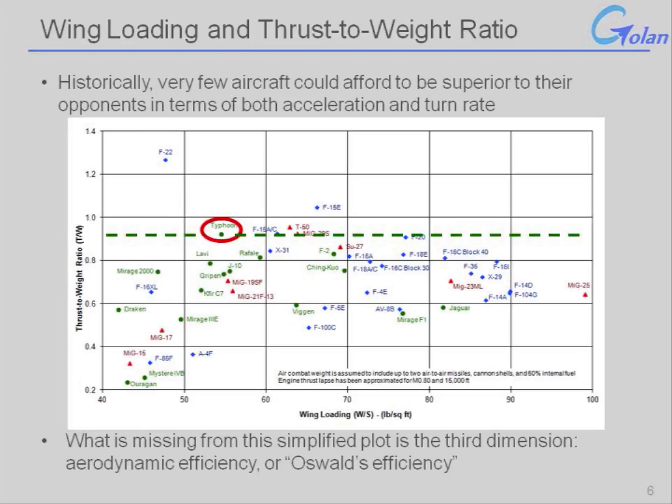Those studies were basically trying to decide what was the maximum thrust-to-weight ratio that the Europeans could afford to develop and still be able to buy a significant number of aircraft. The Typhoon basically sits right where the maximum is that the Europeans ultimately decided they could afford to develop an engine for and still buy enough aircraft to be credible.